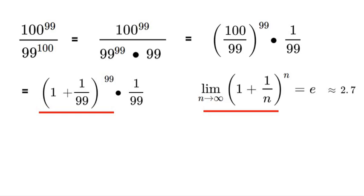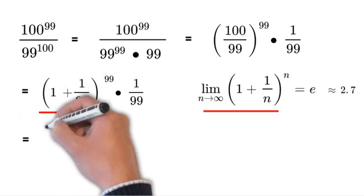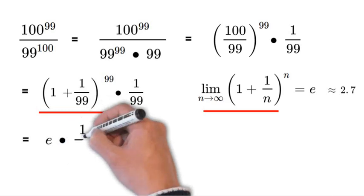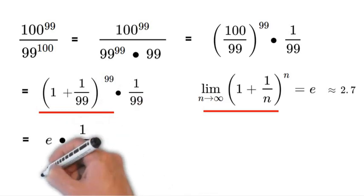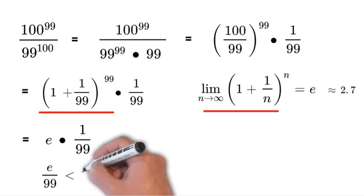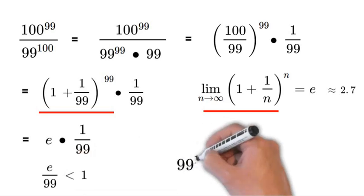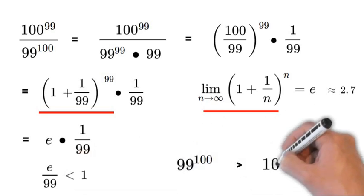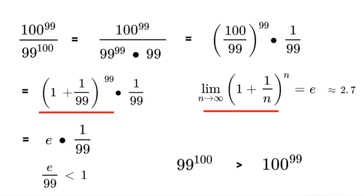Now since that's so, we can say that e times 1 over 99 is equal to e over 99, which is less than 1. Which means 99 to the power of 100 is greater than 100 to the power of 99.